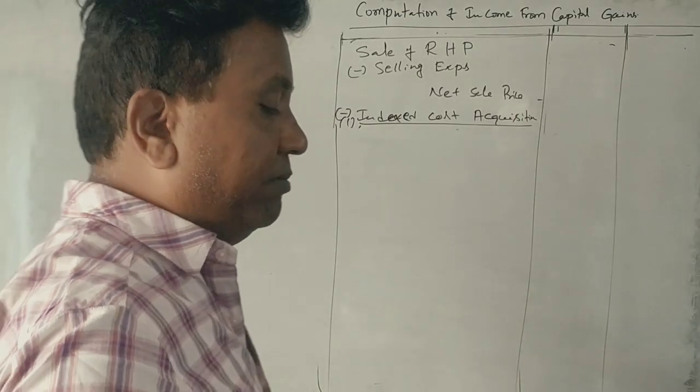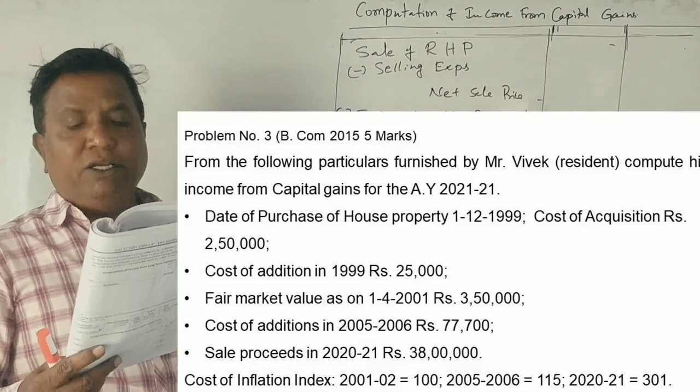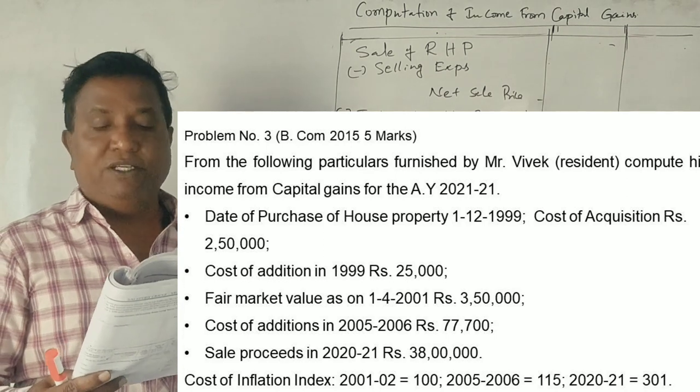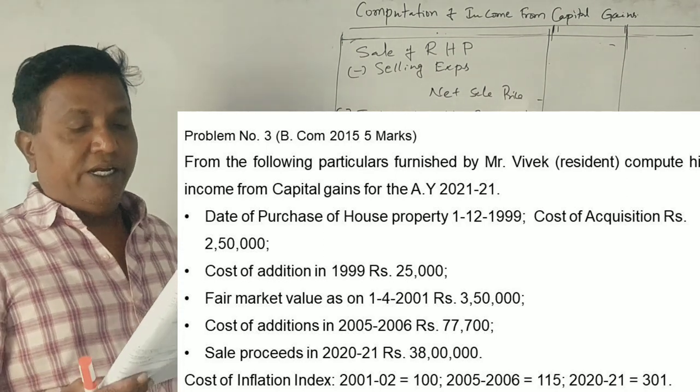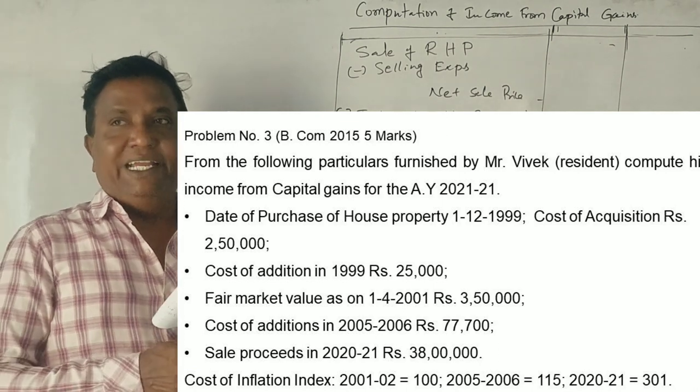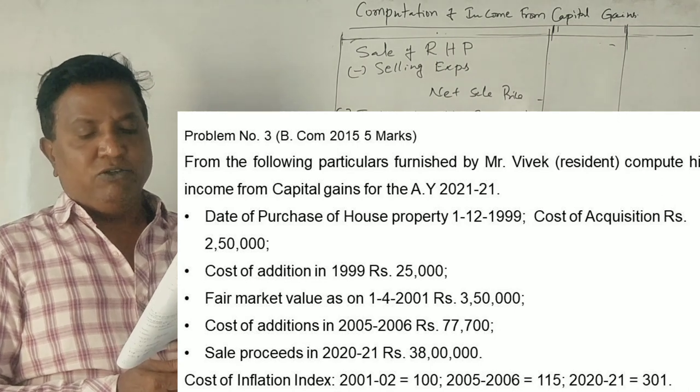Here's a long-term capital gain problem, one of the five marks questions. From the following particulars furnished by Mr. Vivek, resident, compute income from capital gain for the assessment year 2021-22. Date of purchase of house property: 1st of December 1999. Cost of acquisition is Rs. 2,50,000.